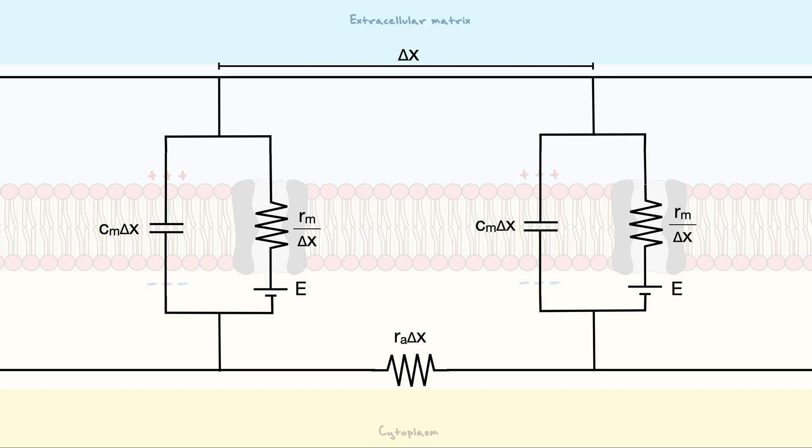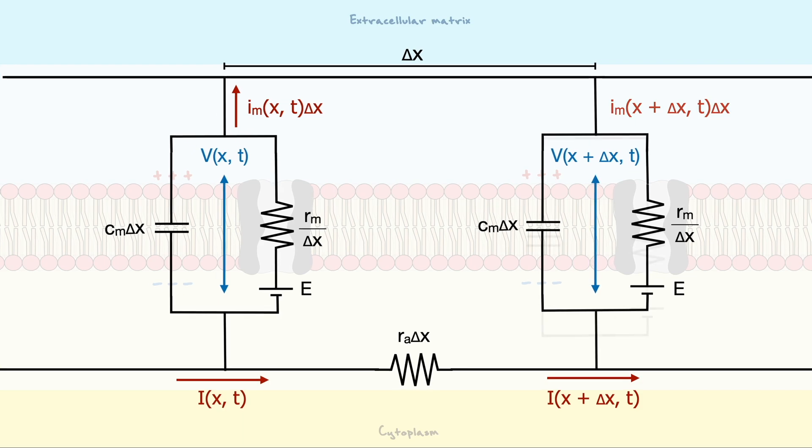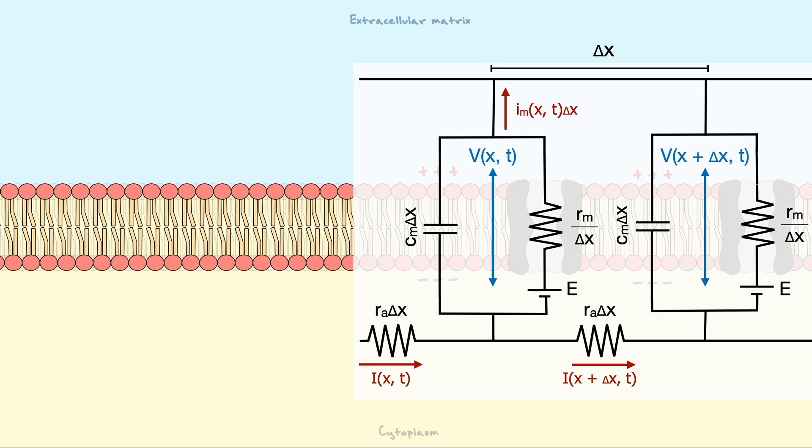So, assuming that the left circuit is at position x, we can indicate the voltage across the circuit as V of x and t. In the right circuit, the voltage will be V of x plus delta x and t. Likewise, we can indicate the currents in the same fashion. Here again, we will adjust the currents that are per unit length by multiplying them with the length.